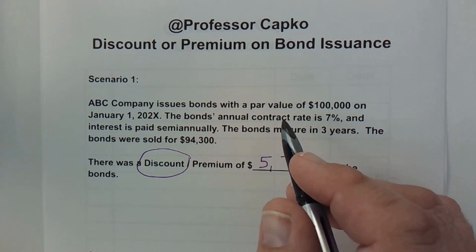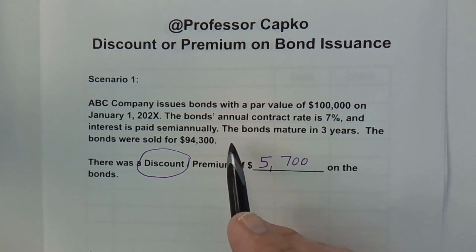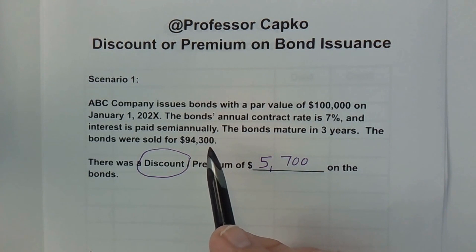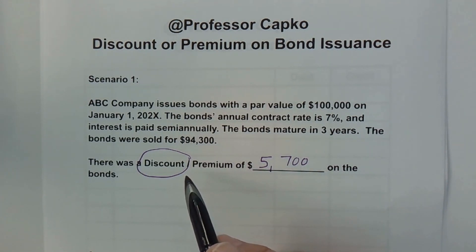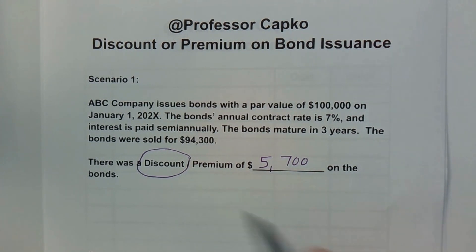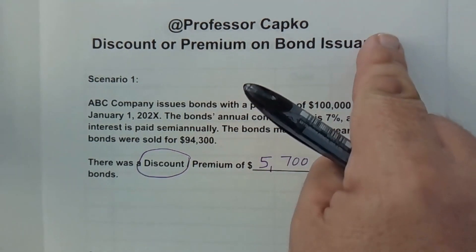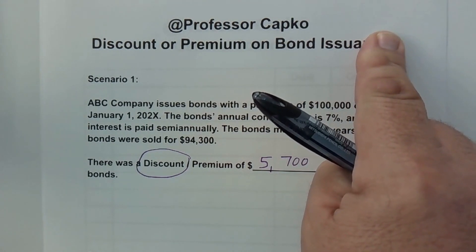I did a prior video in which we discussed how to determine if a particular bond issuance is at a discount or a premium and just how much that discount or premium is. If you missed that video you may want to start out with that — I've linked it up here.